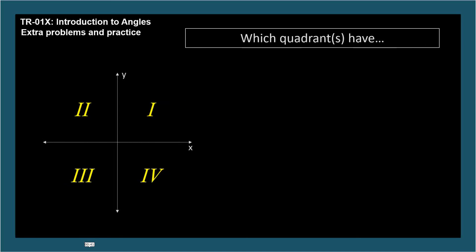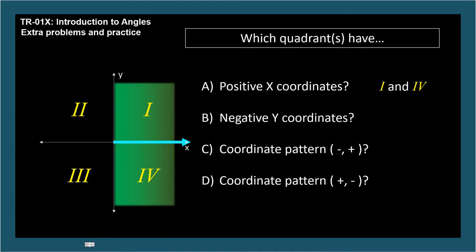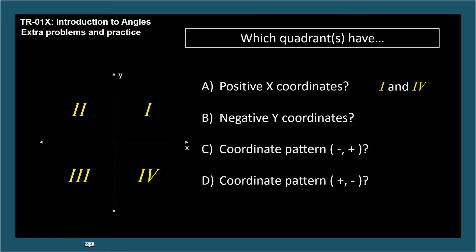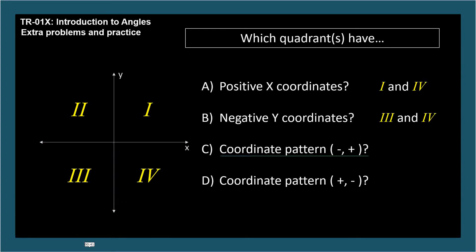We'll do these one at a time. Which quadrants have positive x coordinates? 1 and 4. Which quadrants have negative y coordinates? 3 and 4. Which quadrants have coordinate pattern negative comma positive? That's quadrant 2. And which quadrants have coordinate pattern positive comma negative? That's quadrant 4.